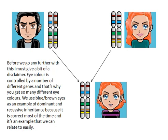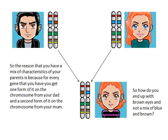So what is recessive and dominant? The reason that you have a mix of characteristics of your parents is because every gene that you have, you get one form of it from the chromosome from your dad — as we can see here, you've gotten his second chromosome for this — and you get one from your mum. You've got her first chromosome, and they come down and make up your chromosome.